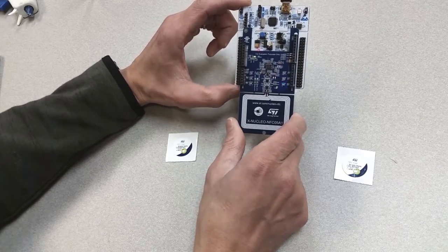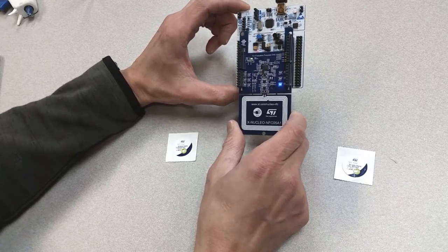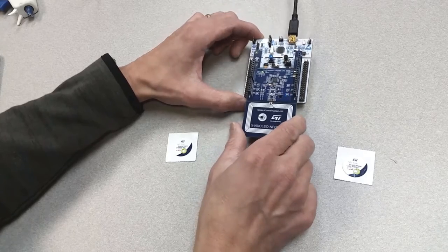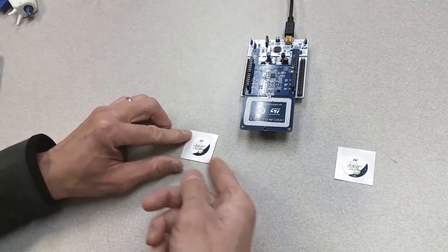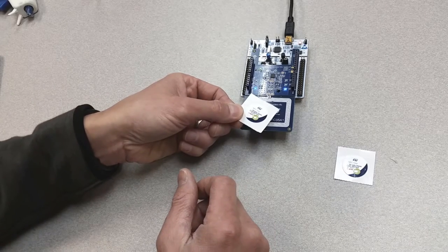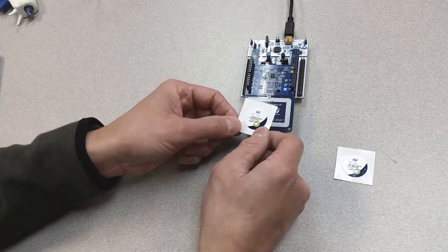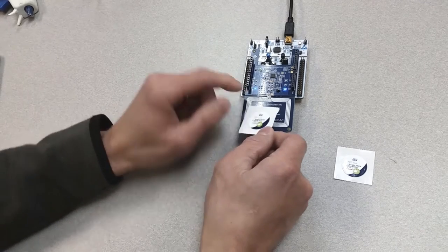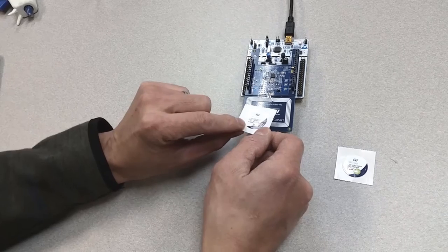For example, if I tap this tag, it showed me that this is a tag but it doesn't do anything more than blinking this LED, identifying the tag itself.